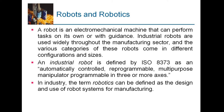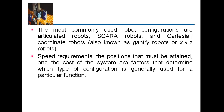These robots are most often driven by coordinate servo gear motors, moving directly on axis. However, sometimes hydraulic robots are also used. An industrial robot, as per ISO 8373, is defined as an automatically controlled, reprogrammable, multipurpose manipulator, programmable in three or more axes. In industry, the term robotics can be defined as the design and use of robot systems for manufacturing. The most commonly used robot configurations are articulated robots, SCARA robots, and Cartesian Coordinate Robots.